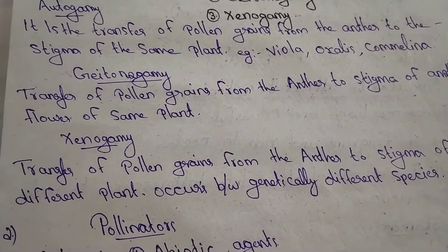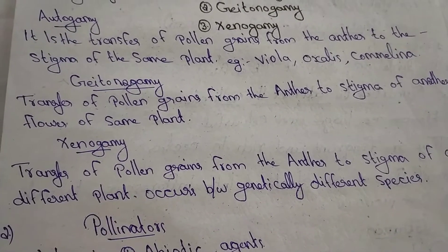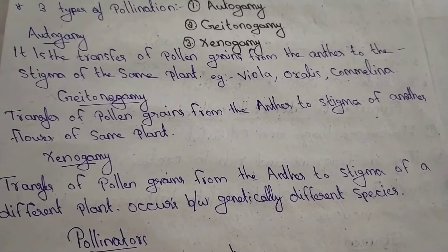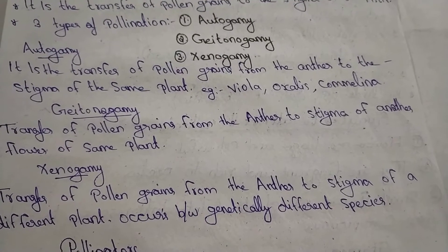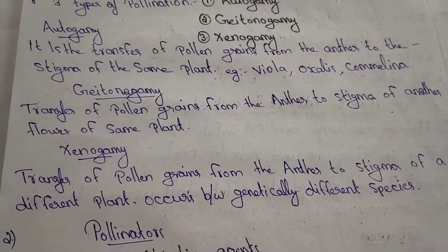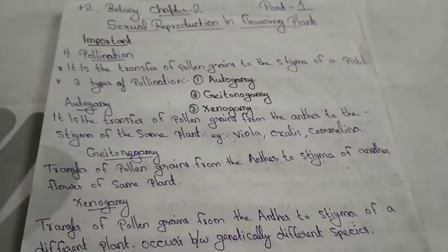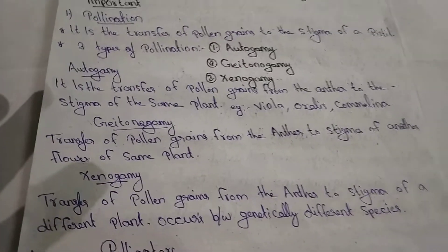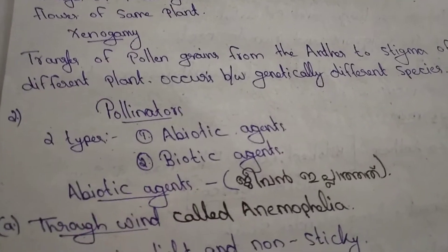It is a transfer of pollen grains from anther to stigma of a different plant — this is xenogamy. It is a transfer of pollen grains from anther to stigma of another flower of the same plant.